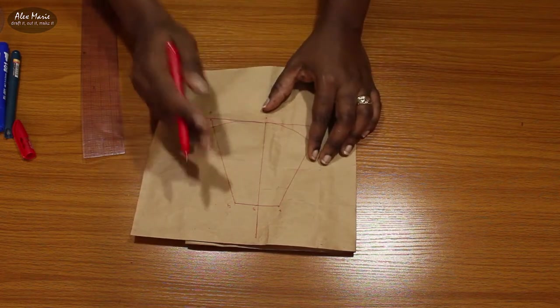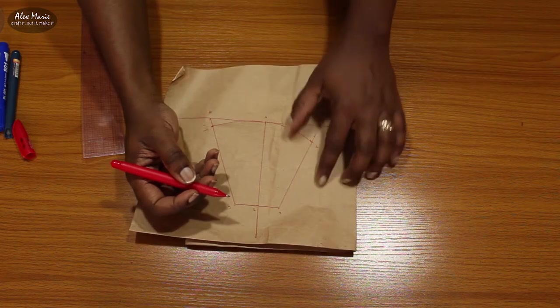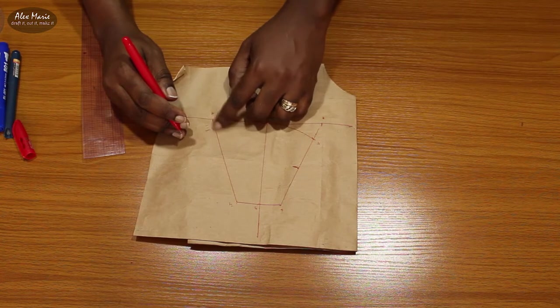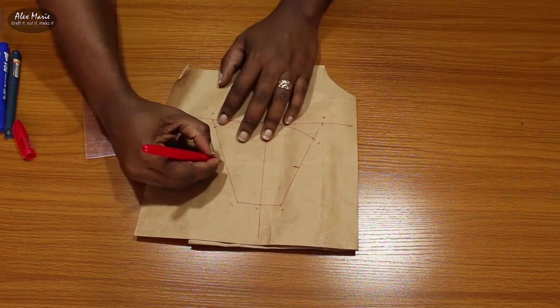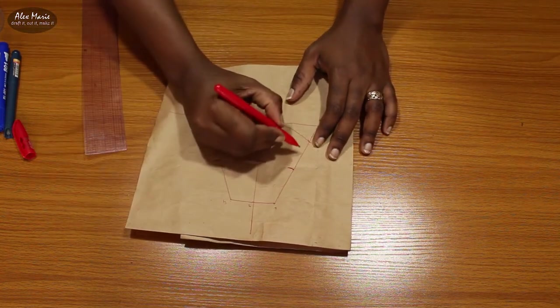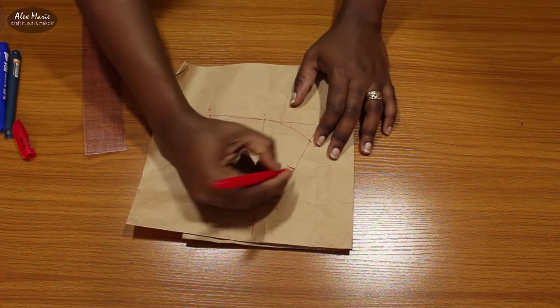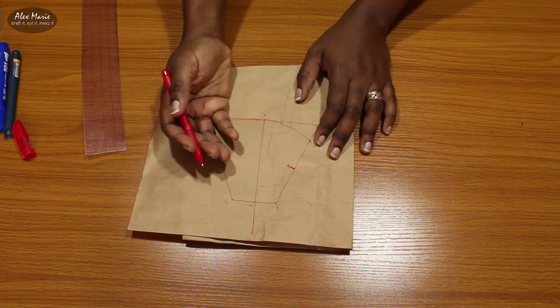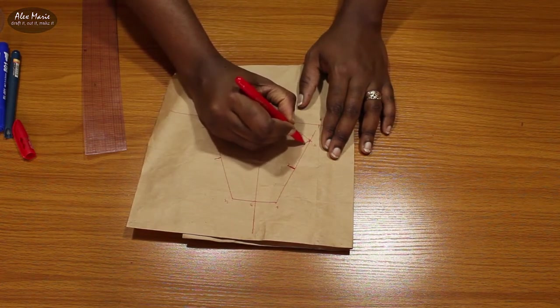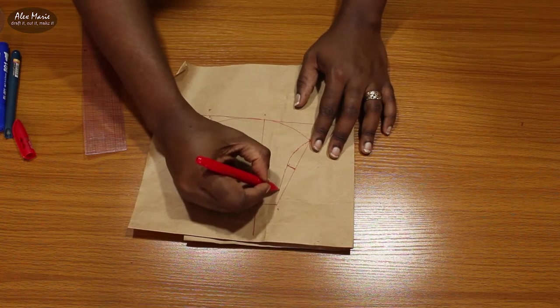For the line A to E you want to curve inwards like that, and the line H to F, the same thing you just want to curve inwards. I'm curving inwards about a quarter of an inch or maybe up to one centimeter, it could even be deeper depending on how you want to balance it out. I'm just going to freehand it.